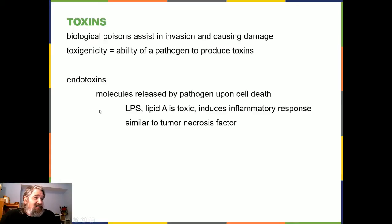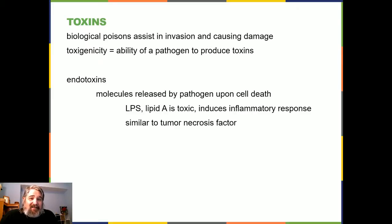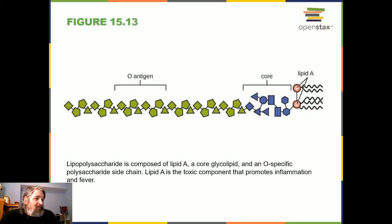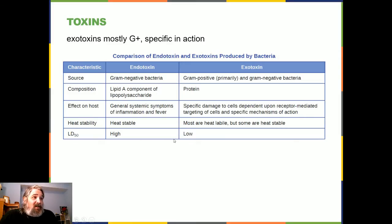Endotoxins are molecules released by the pathogen upon its death. Lipopolysaccharide — specifically lipid A — is toxic and induces an inflammatory response similar to tumor necrosis factor. When cells are destroyed by the immune system, they release these toxins. The LPS is composed of lipid A, the core, and the O antigen; lipid A is the toxic component. Exotoxins, by contrast, are mostly from gram-positive organisms and are secreted rather than released upon cell death.